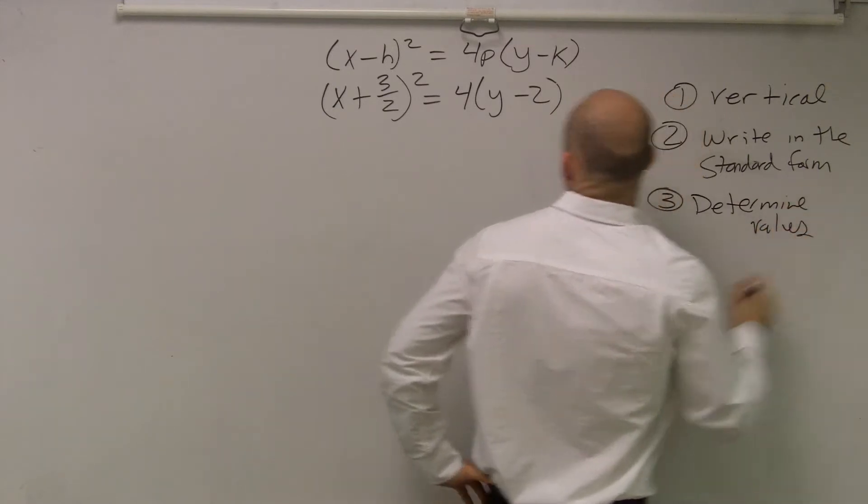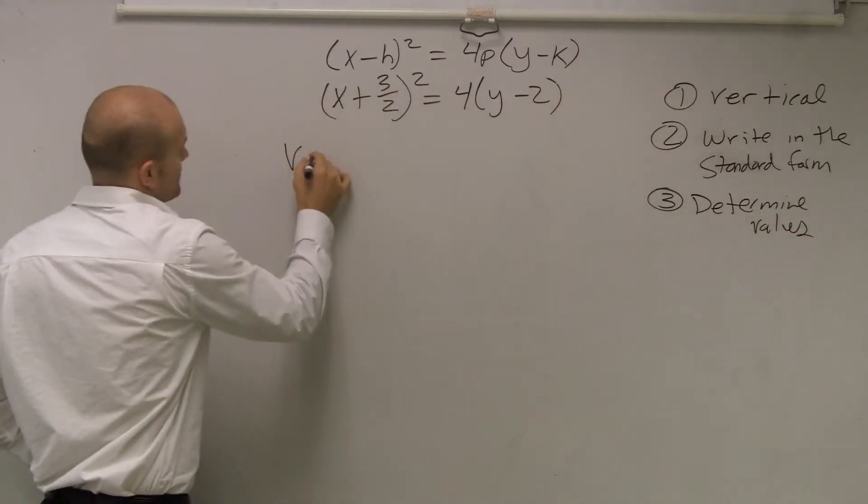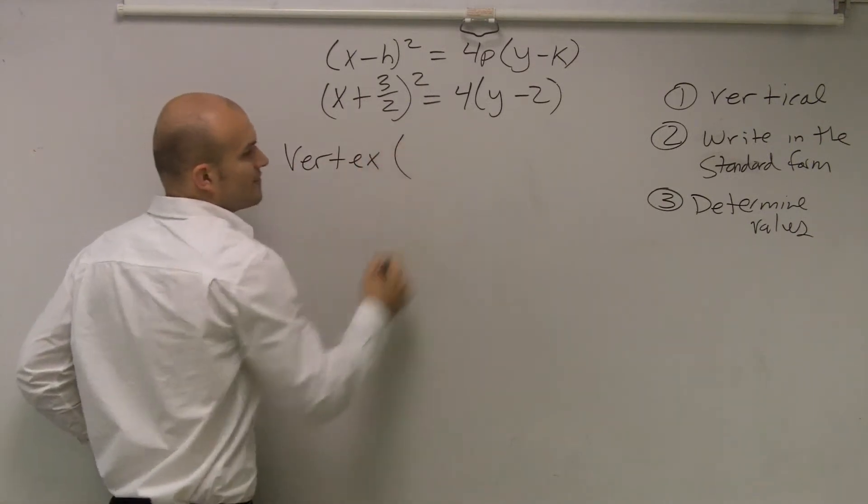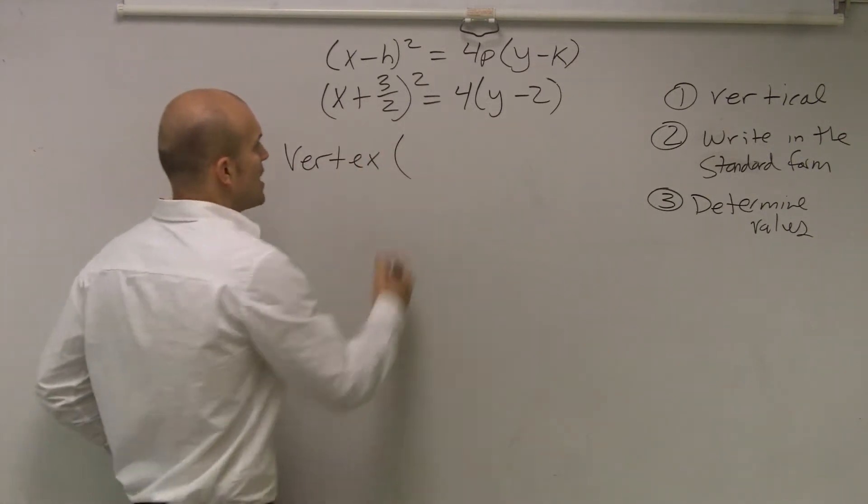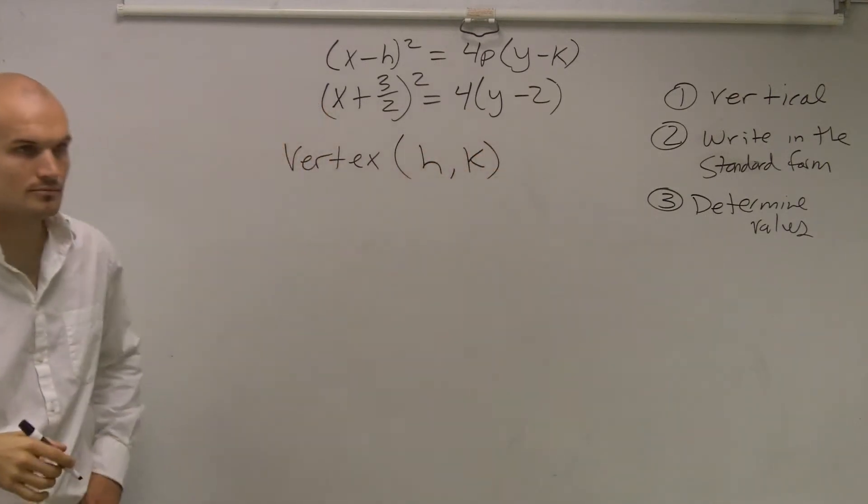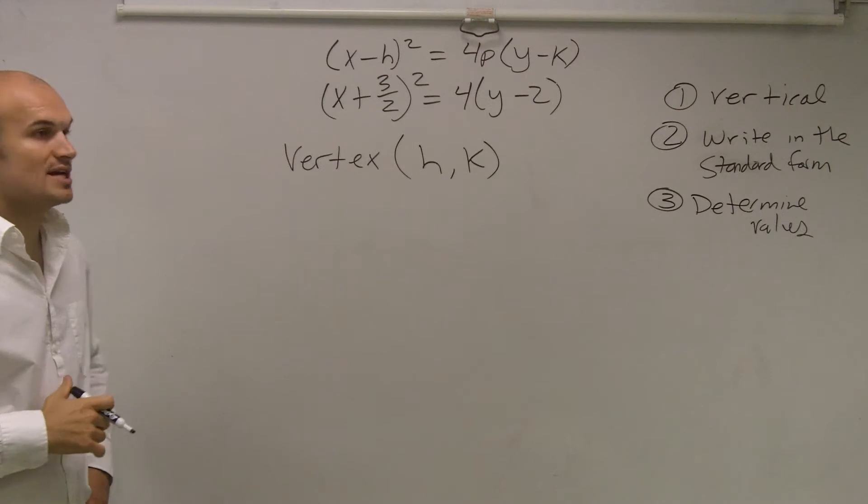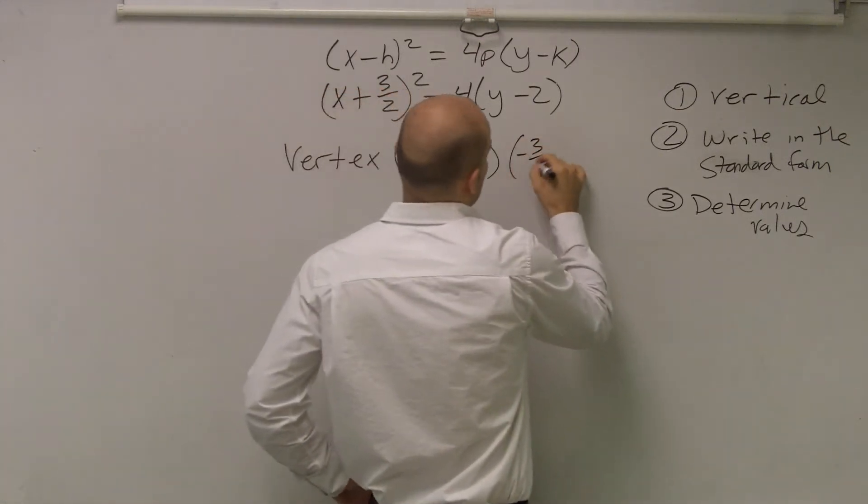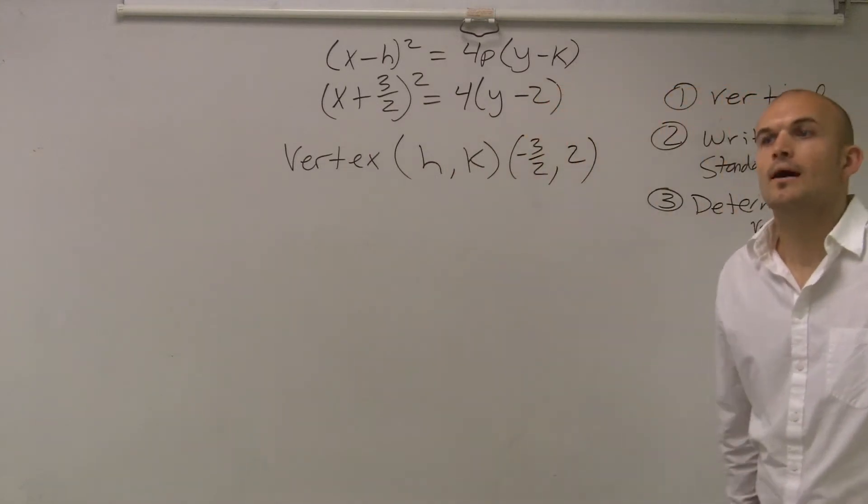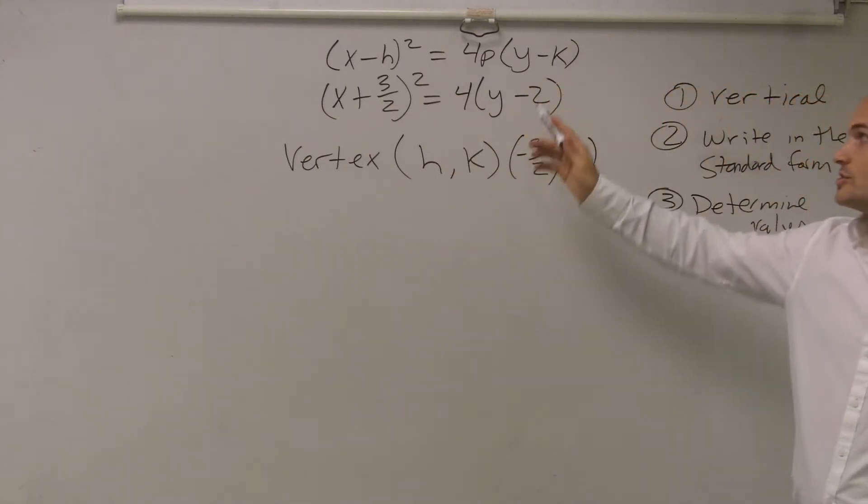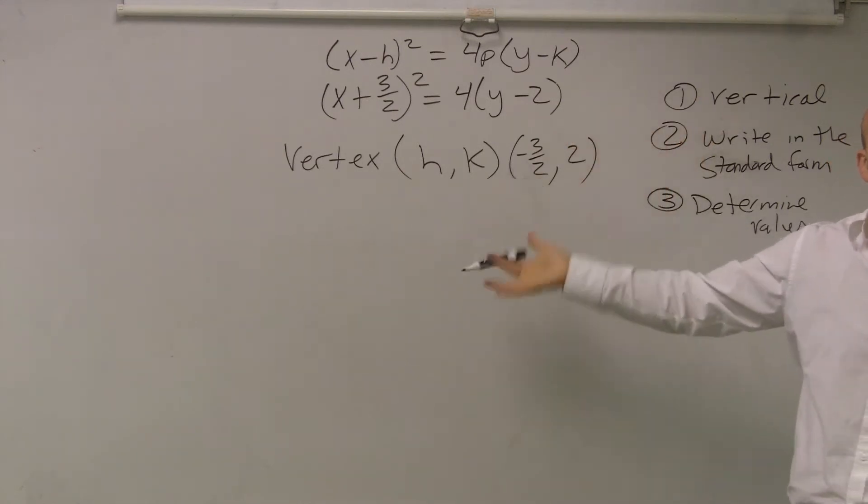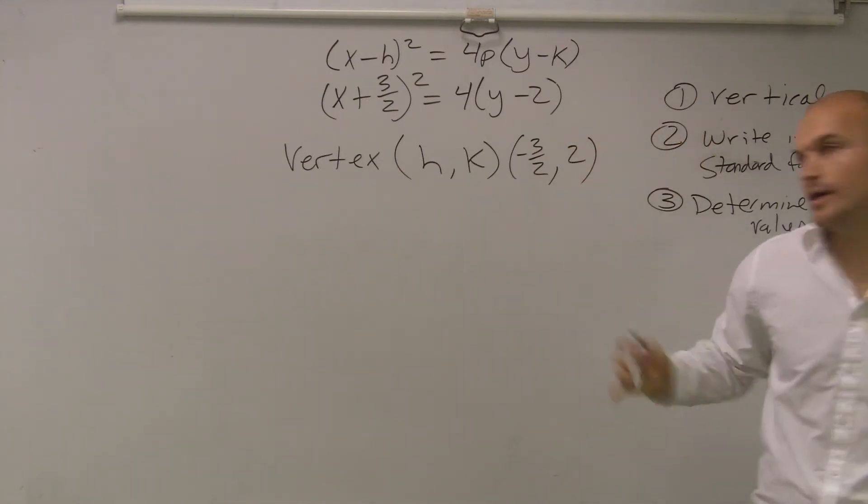So the first one is our vertex. The vertex, even if you guys remember when we did vertex form of a parabola, is h comma k. So our vertex for this one is going to be (-3/2, 2). And please remember, since it's x minus h and y minus k, you're going to be taking the opposite of those values.